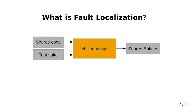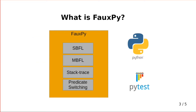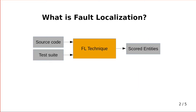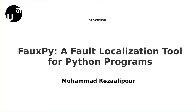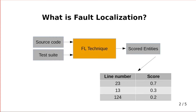A fault localization technique takes the source code of your project, then a test suite which has a failing test at least, which reveals a bug. And then it returns a list of scored entities — something like a table.